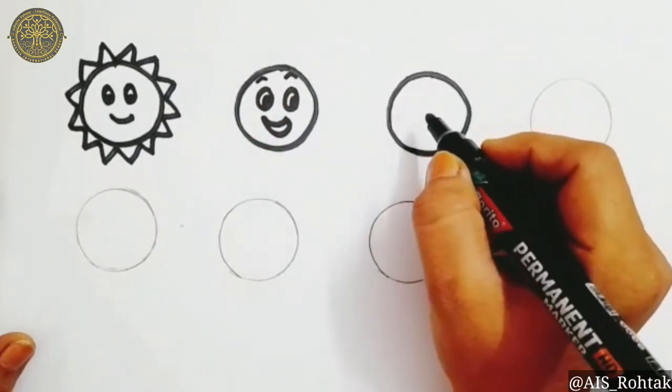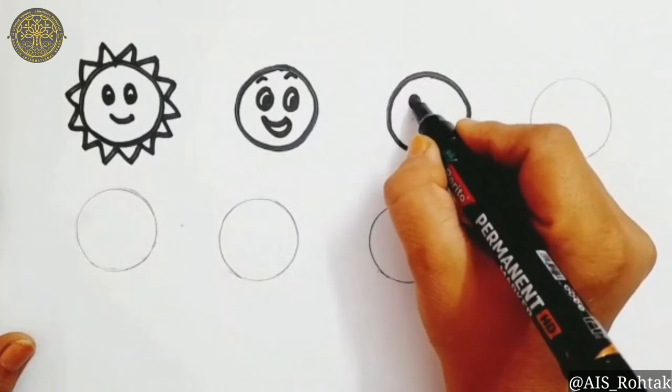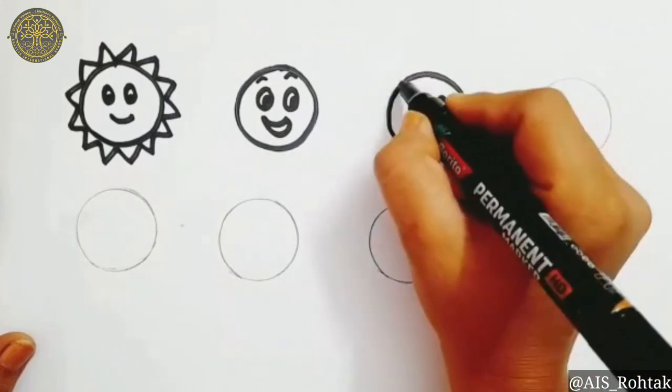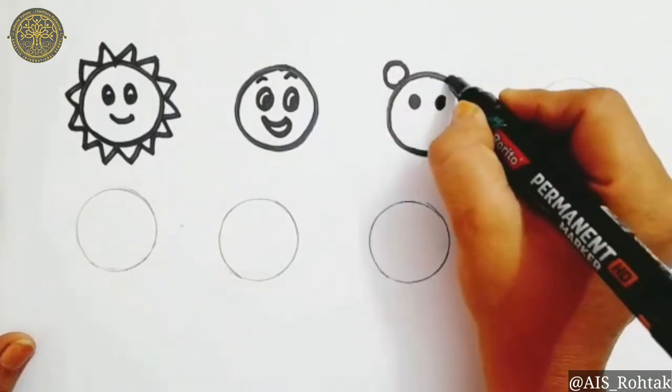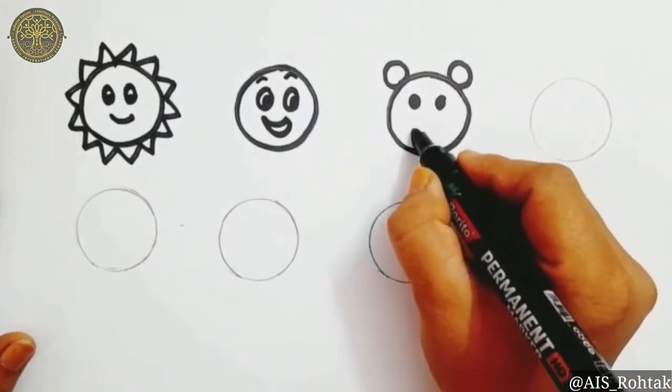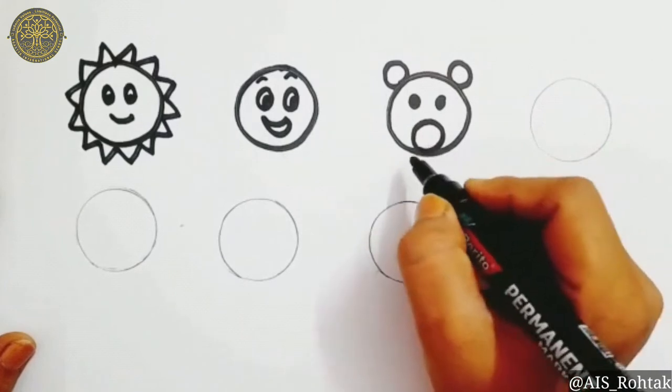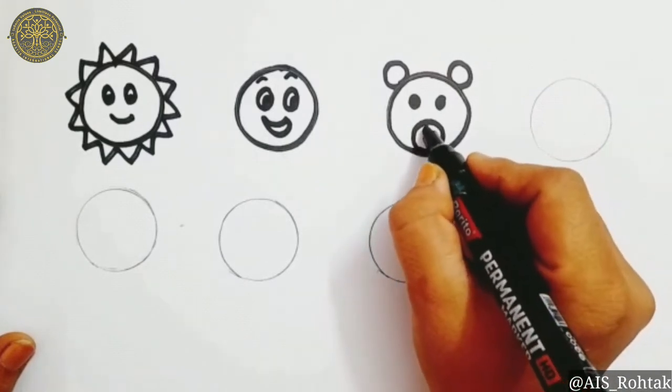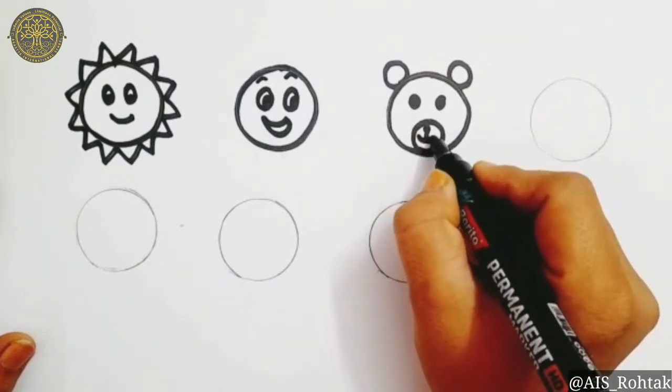Come to the third circle. Outline it. We are going to make a teddy bear. Just draw two dots for the eyes and two circle shapes for the ear. For the mouth, draw one more circle. A standing line and a smile. Our teddy bear is ready.